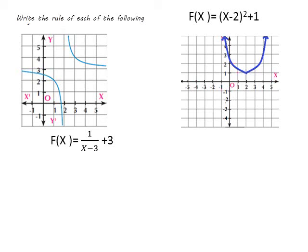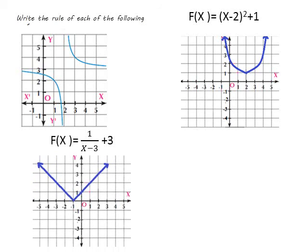The horizontal shift equals 2 units to the right, giving (x − 2), and the vertical transformation equals 1 unit up, giving + 1. For the absolute value function, the vertex equals (−1, 0), so it is shifted 1 unit to the left on the x-axis with no vertical transformation. The function rule is f(x) = |x + 1|.